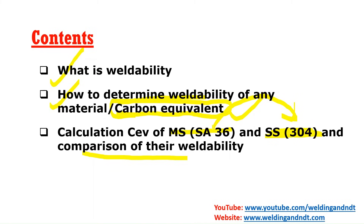You will have seen the carbon equivalent formula many times, but nobody would have calculated it for any actual material. In this video I'll calculate the carbon equivalent of two materials — mild steel and SA36 — and compare their weldability. This is basically a very practical kind of video to explain what weldability is.